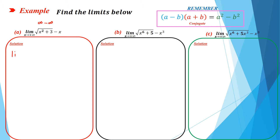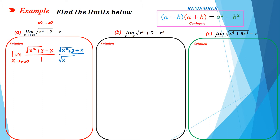So the limit will be: limit of square root of x squared plus three minus x, divided by one, when x goes to positive infinity. Now you have to multiply by the conjugate of the numerator, which is square root of x squared plus three plus x, divided by the same conjugate in the denominator.